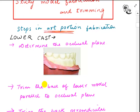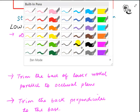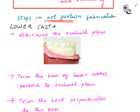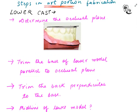For the lower cast, first we have to determine the occlusal plane. This is done by considering the highest three points in the arch — joining them together gives the occlusal plane. We have to trim the base of the lower model parallel to the occlusal plane, and then trim the back portion perpendicular to the base — that should be 90 degrees.